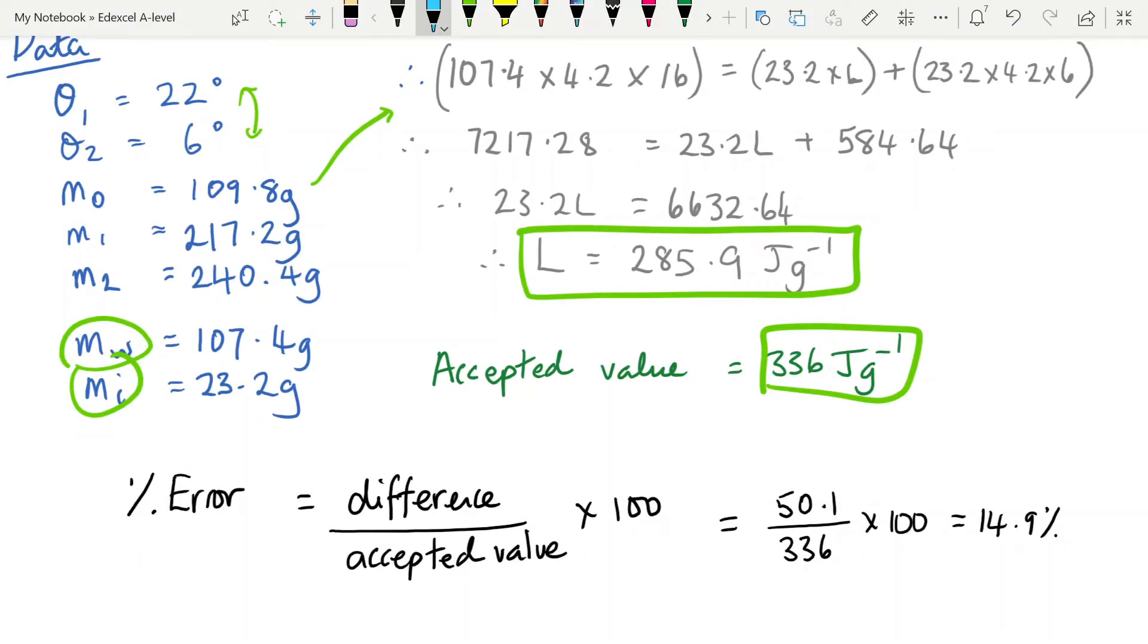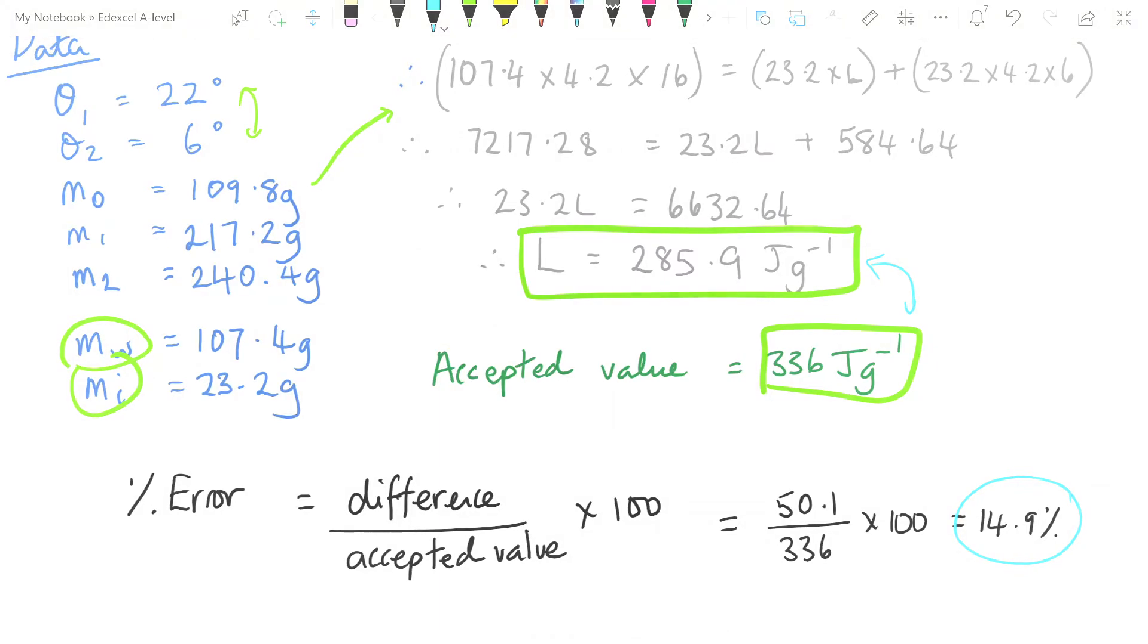Exactly how bad? We can find out by calculating the percentage error. So the difference between my value and the accepted values, you just subtract those over the accepted value. If we know an accepted value, that always goes on the bottom of that equation, times 100 gives me a percentage error of 14.9%. Now, that might seem like a lot, but we have made a lot of assumptions over the course of this experiment, and I will come back and look at those in a moment.